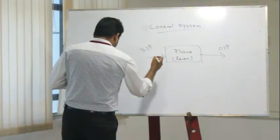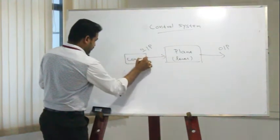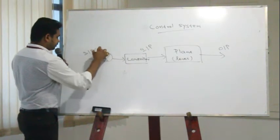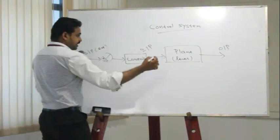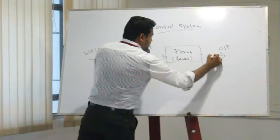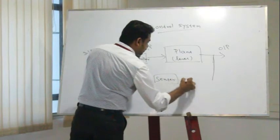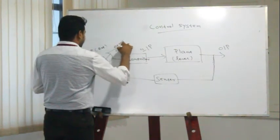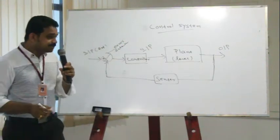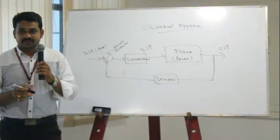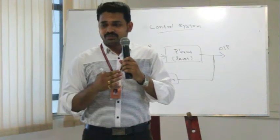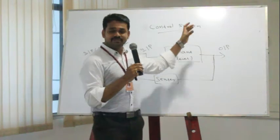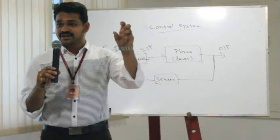So in a control system, we have a reference input, then an error detector, then a controller, and then a plant. The output is sensed by a sensor, and this sensor output is given to the error detector. This is a simple closed-loop system. The control system has: a reference input, error detector, controller, and plan to be controlled.